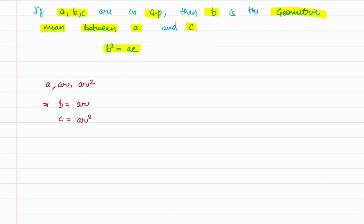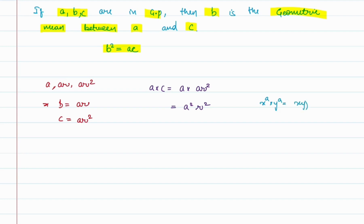When we take the product of the first and the last term, which are a and c, the product is a into a·r², which equals a²·r². Using the property of exponents — x^A into y^A equals (x·y)^A — this becomes (a·r) whole squared. Since a·r equals b, this becomes b².